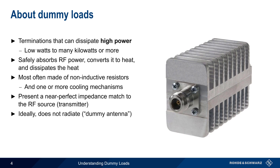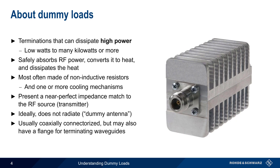In addition, dummy loads are designed not to radiate the received signal, and thus are sometimes also referred to as dummy antennas. Note that in reality, dummy loads usually still do radiate some of the received power. Most dummy loads are coaxially connectorized, such as the image shown here, but dummy loads with flange-style terminations are used when terminating waveguides.